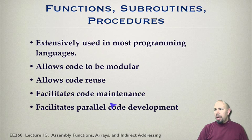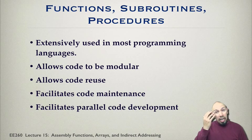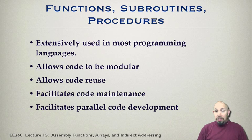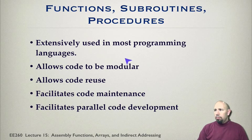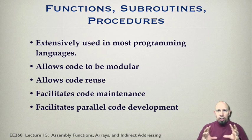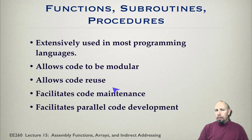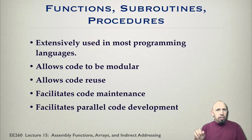Functions can facilitate code maintenance. Most of us at a hobbyist level don't think a whole lot about code maintenance, but if you actually want to make a living doing programming then code maintenance is really critical. You need to keep track of revisions and document everything. If things are modular, you only need to fix that one piece. It can also facilitate parallel code development — one person could be working on one part while another works on another.